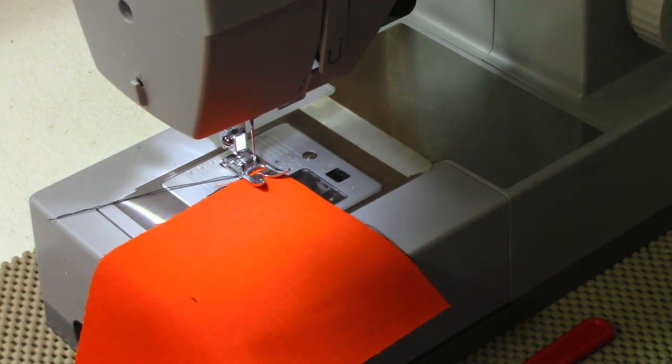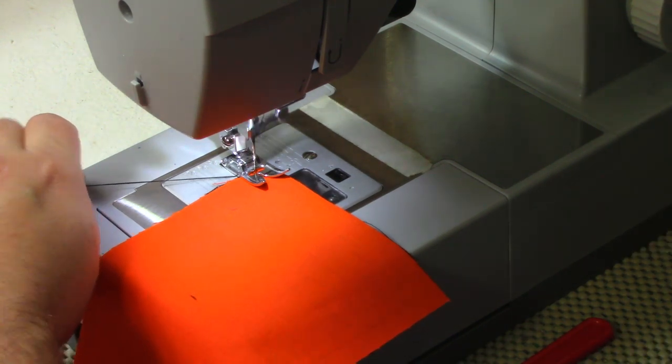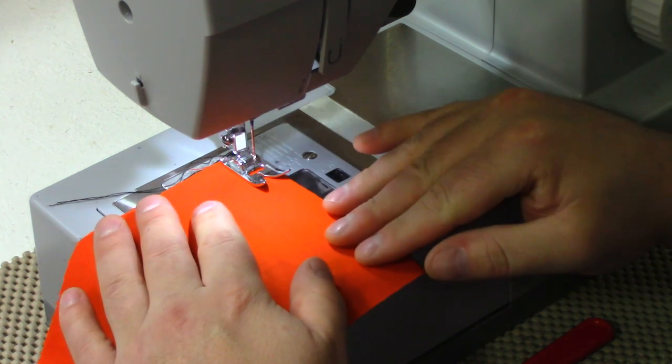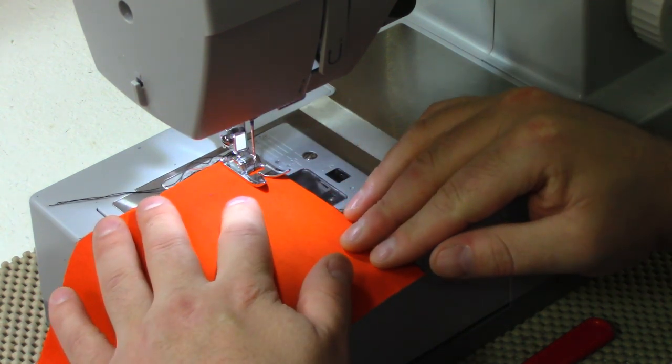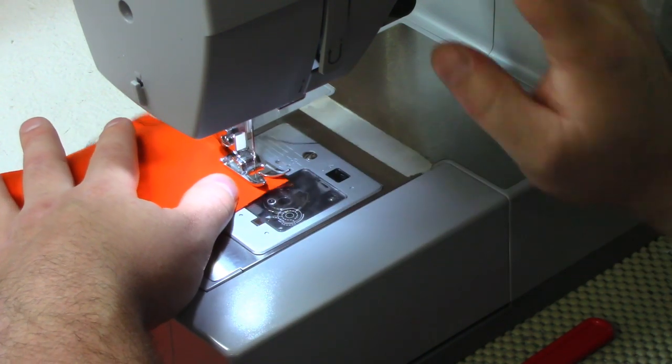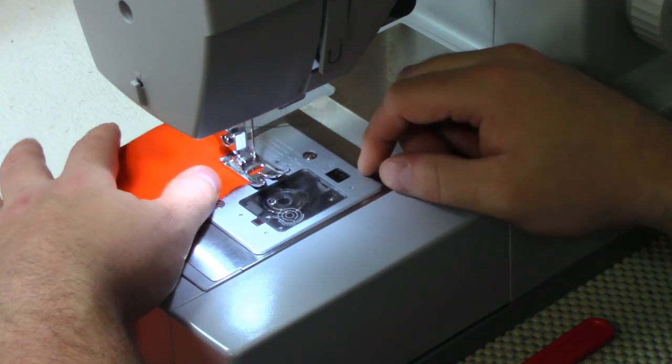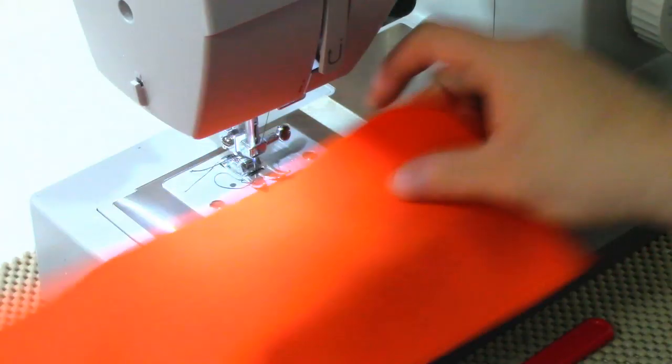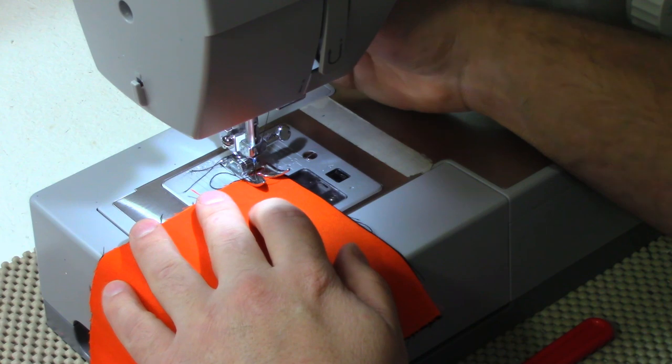All right, so I'm over here at the sewing machine. Today I'll be using a straight stitch and my length is a 2.5. So I'm going to backstitch in the beginning and just keep sewing. Don't forget to backstitch at the end. And I'm going to do that to both of my short sides.